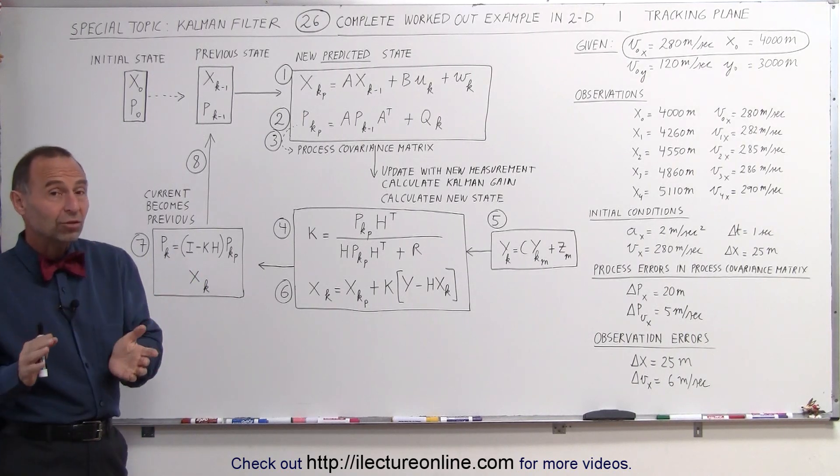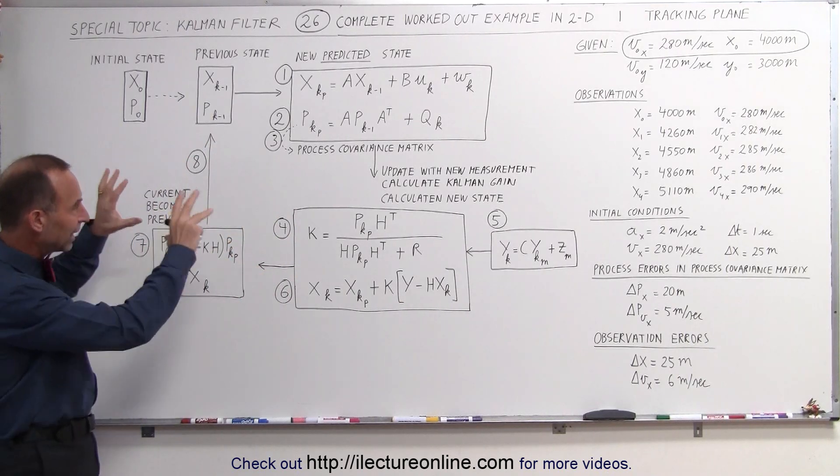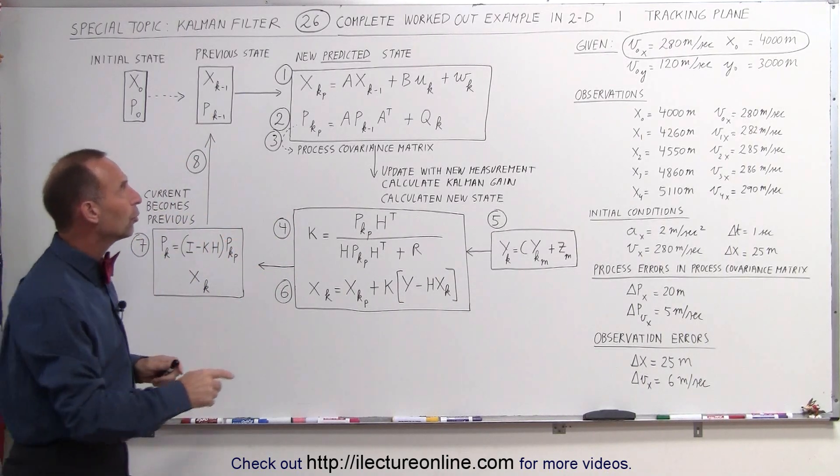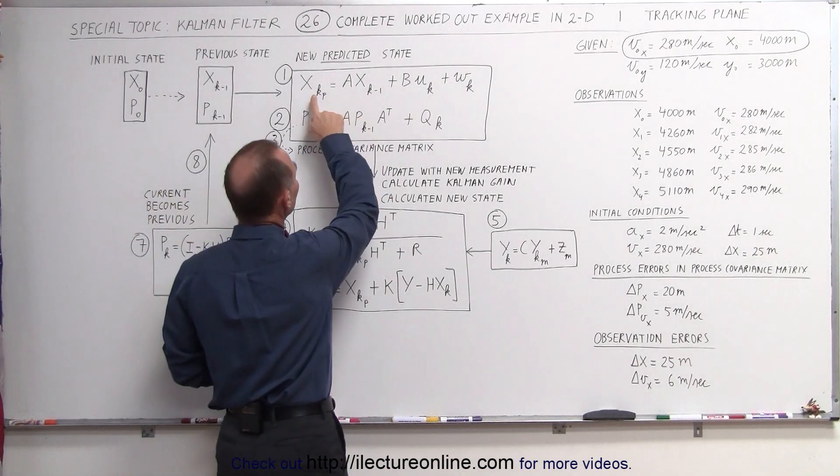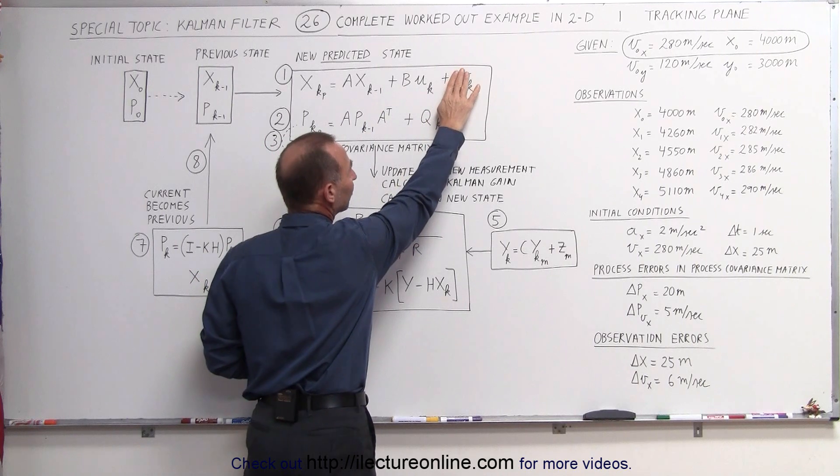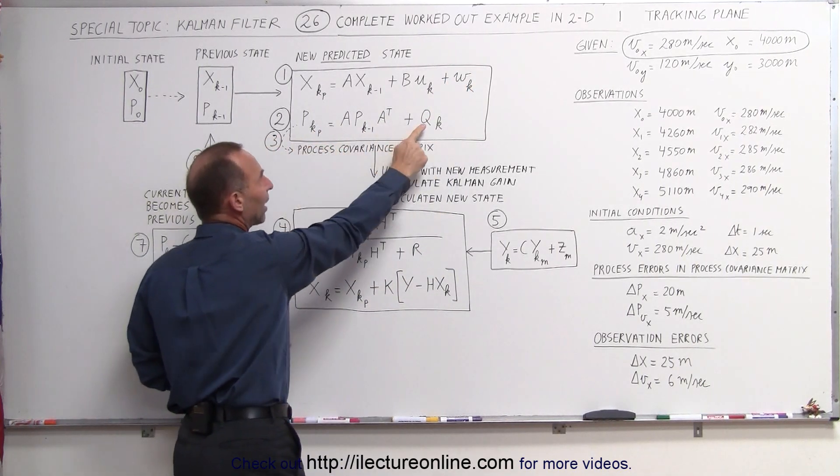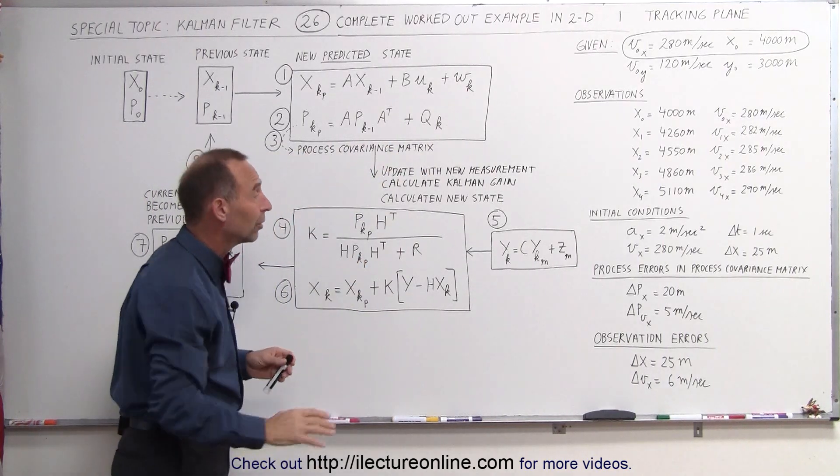By now, if you've been watching the videos, this should look like a familiar scheme here. This is how the Kalman filter works in a graphical sense. Notice that the calculation for the state has this error function in it here, we're going to ignore that for now, we're going to call that zero. The process covariance matrix also has an error statement here which we're going to ignore, call that zero.